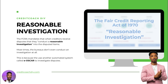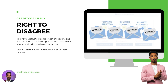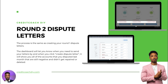The reasonable investigation: the Fair Credit Reporting Act mandates that when creditors and credit bureaus receive disputes, they have to conduct a reasonable investigation into your disputed item. Most times the bureaus don't even conduct an investigation at all — they use an automated system called E-Oscar to handle disputes. You have the right to disagree with the results and ask for proof of the investigation. That's what your round two dispute letter is all about. This is why the dispute process is a multi-letter process. With Credit Coach DIY, you don't have to worry about switching up language and changing strategy — the AI software does that for you.